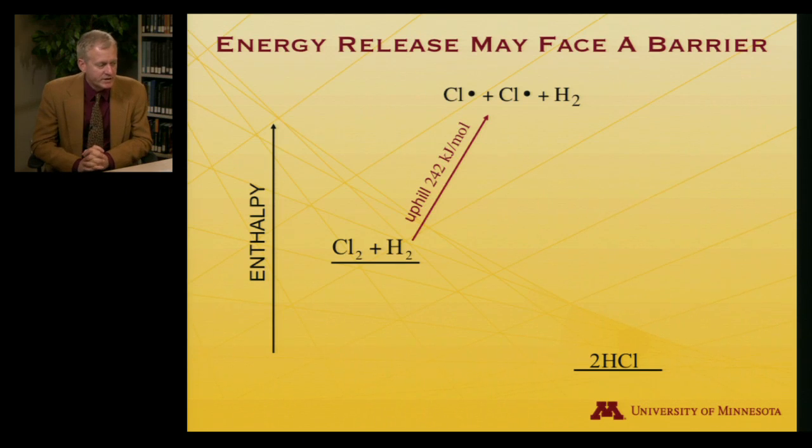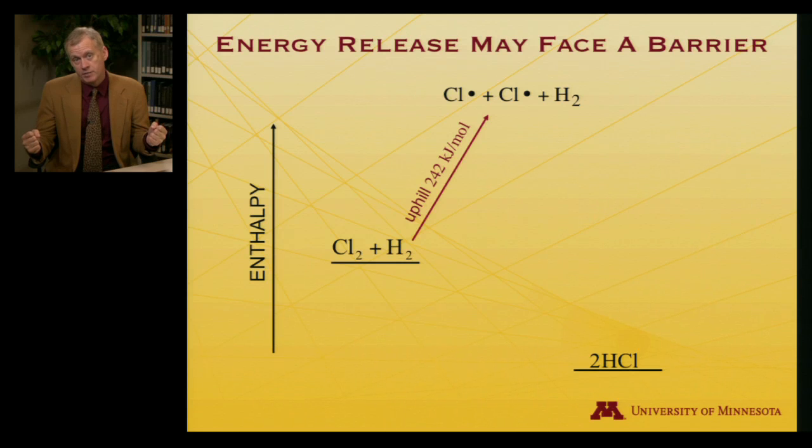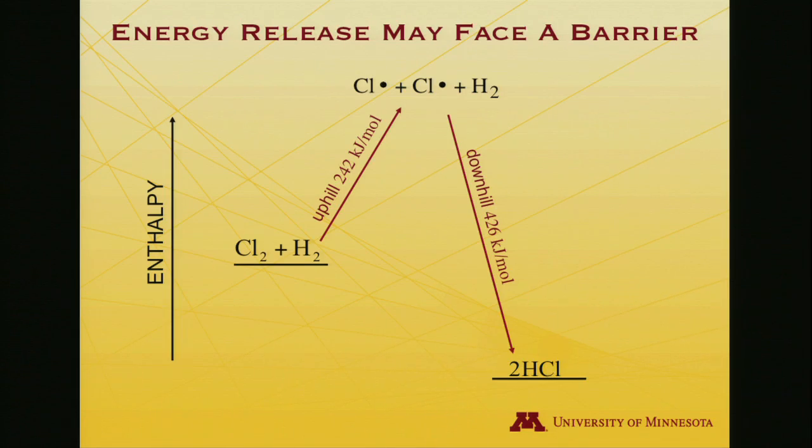And in fact, one way we might go up would be to break a chlorine-chlorine bond first. And that, as we discussed, has a 242 kilojoule per mole input of enthalpy required. So you need to give it that much energy to get up to the top of the hill, at which point you will skitter downward fast, to get 426 kilojoules per mole down to products. That's the equivalent of drawing some sort of a curve along the reaction coordinate, and that's the hill I was alluding to.